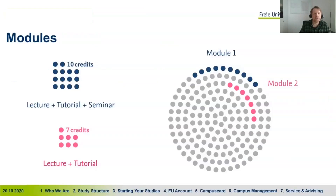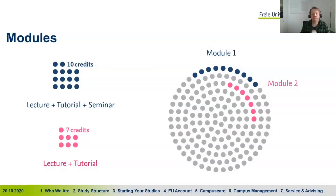Credits awarded to modules can range from 5 to 15 — it could be 10, 7, 6, or 5. To complete one module, you usually have to do one, two, or maybe three courses and one or two exams. Those modules are like parts of your study program.